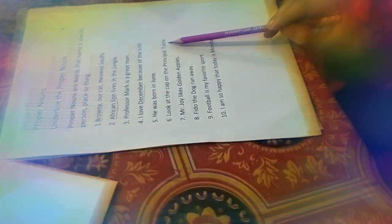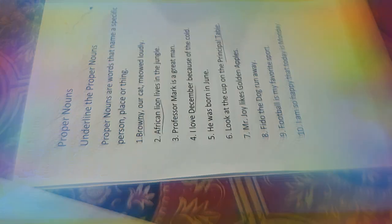Next sentence: 'He was born in June.' June — why? Because its first letter is capital. So one thing to remember: we have to start proper nouns with a capital letter, and all the days of the week and all the months of the year are proper nouns. Then: 'Look at the cup on the principal's table.' What about 'cup'? It is a common noun — because it does not start with a capital letter and it's not a specific thing. But 'principal's table' is a specific thing, so it is a proper noun.